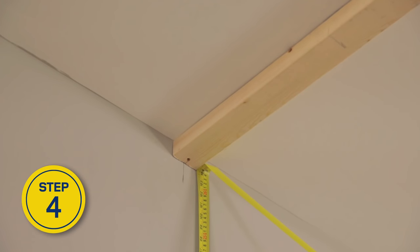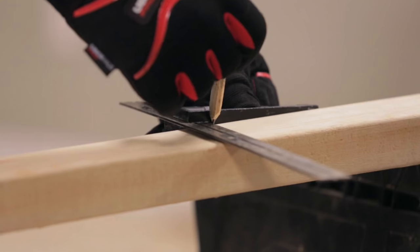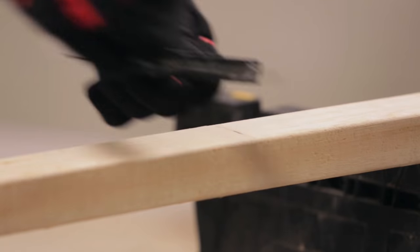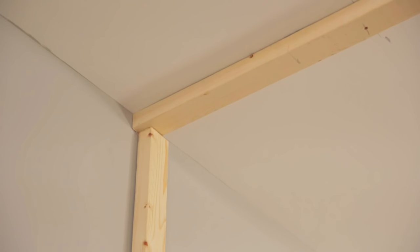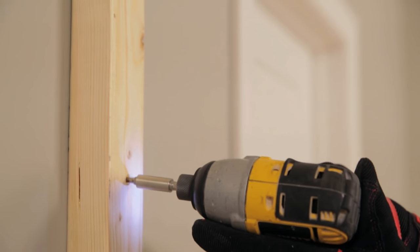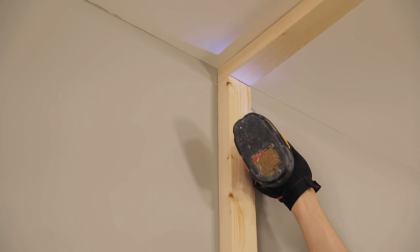To install the studs, measure the distance between the two plates along the existing wall, then cut the first vertical stud to length. Place the stud between the two plates, making sure it's vertically level, and screw it to the stud or cross stud of the existing wall. Screw it to the plates as well.